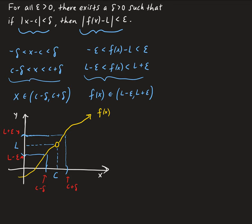What this is saying is that for every epsilon, no matter how small epsilon is, we can always find a delta that surrounds our c value. So epsilon could be something like 0.00001, and we can always find a delta corresponding to that neighborhood of epsilon.